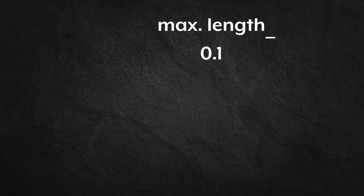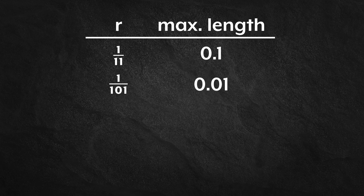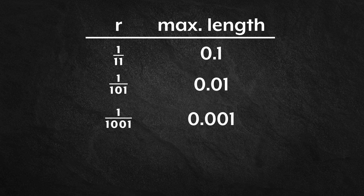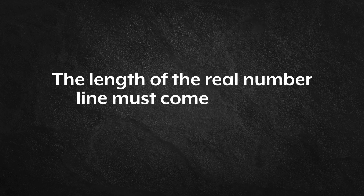But our choice of a ribbon length of zero point one was arbitrary. If we chose r to be one over one hundred and one, we'd have a ribbon length of zero point zero one, and we would conclude that the rational numbers take up at most zero point zero one length on the real number line. And if we chose r to be one over one thousand and one, we'd have a ribbon length of zero point zero zero one, and we would conclude that the rational numbers take up at most zero point zero zero one length on the real number line. So how long are the rational numbers? Well, they must have a length less than zero point one, less than zero point zero one, less than zero point zero zero one, and so on. And the only length less than all numbers in this sequence is zero. The rational numbers must have a length of zero — or better put, the rational numbers have measure zero — which means that the length, the measure, of the real number line must come from the irrational numbers.